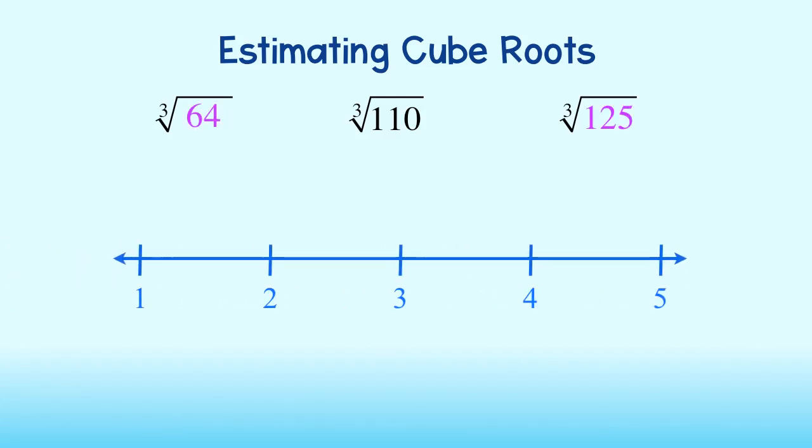The cube root of 64 is 4, and the cube root of 125 is 5. Therefore, the cube root of 110 must lie somewhere between 4 and 5. Since 110 is closer to 125, I will guess that it is approximately 4.8.